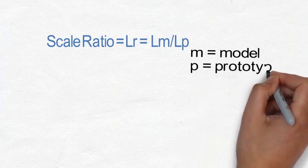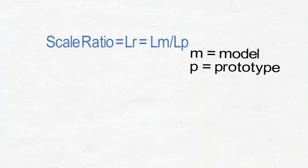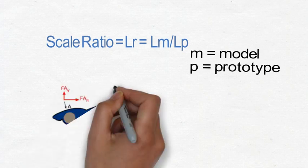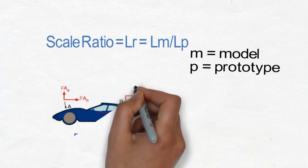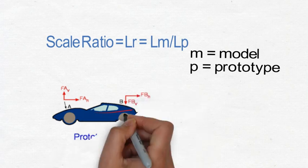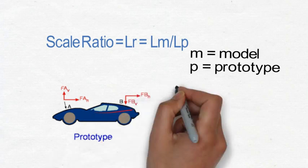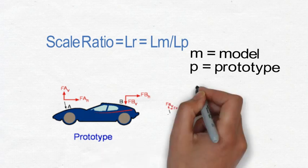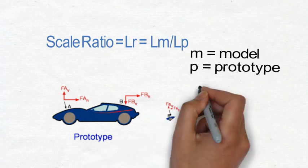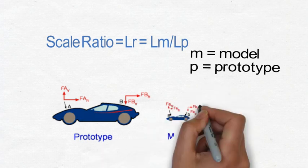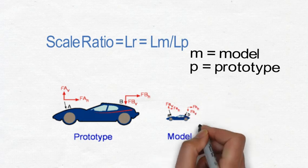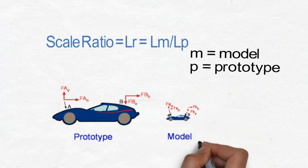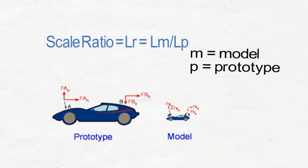Now if you want to understand what is model and prototype, suppose if you have to develop a car. Before going to build a real car, we have to develop a model of that particular. And we have to satisfy all the criteria on that model first. If the model will pass, then after we will develop the prototype. So this is the model and prototype basis.